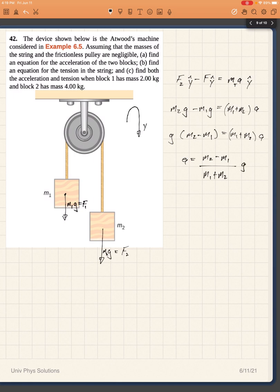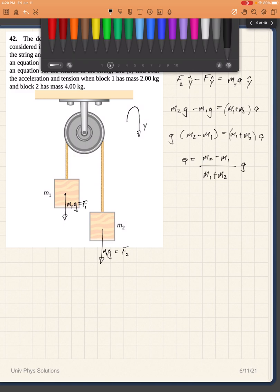And so then my acceleration becomes M2 minus M1 over M1 plus M2 times G. All I did is I divided this quantity by this quantity. Okay so that's part A, I found my acceleration.